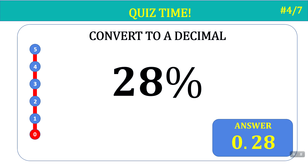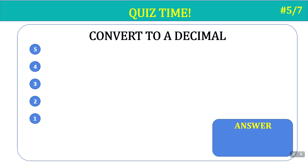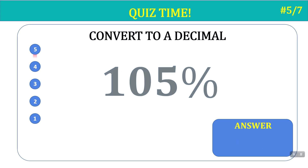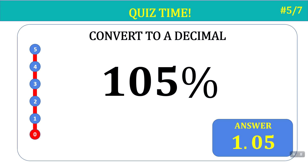If you look at the question — 28 percent — and look at the answer — 0.28 — you see the same digits. The only difference is there is a zero and a decimal point on the left. Question five: convert to a decimal — 105 percent. Time's up — the answer is 1.05. In all of the other questions, every answer started with zero point something, because when we moved two places to the left there was no digit in place. But with 105 percent, when we move the decimal two places to the left, there is still the number 1 to the left of the decimal, which we have to keep. So the answer is 1.05.